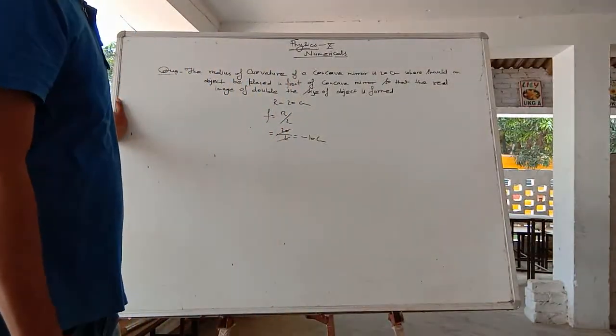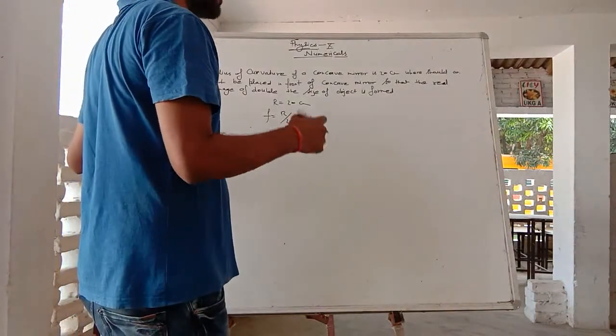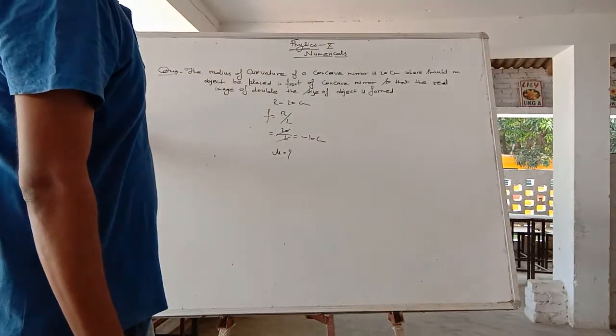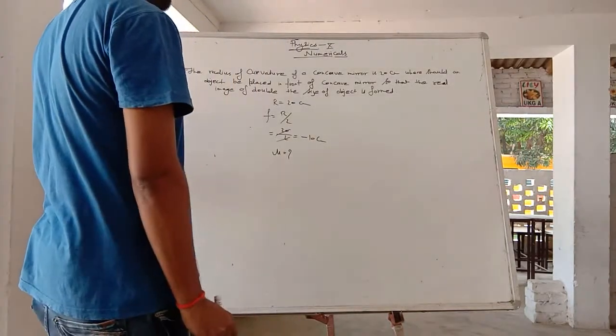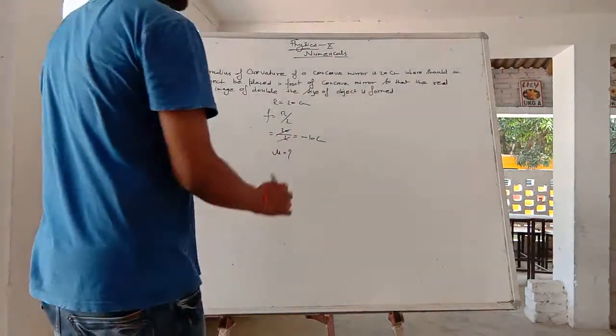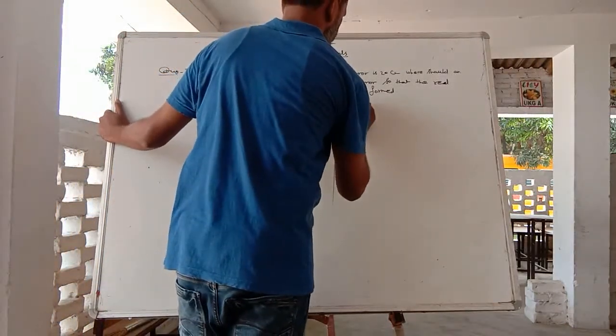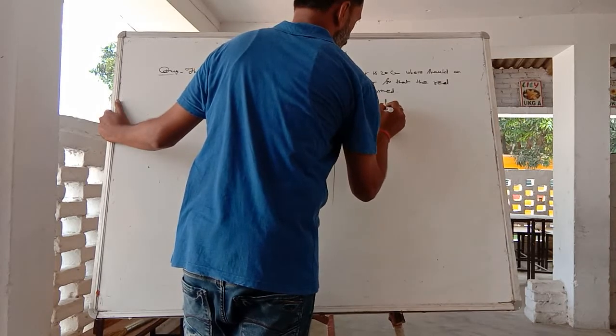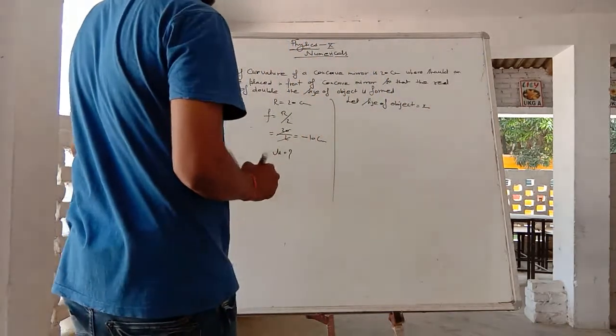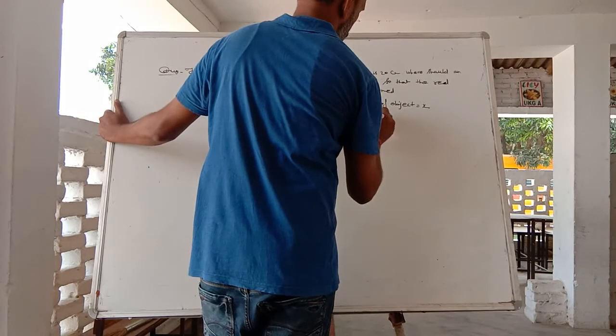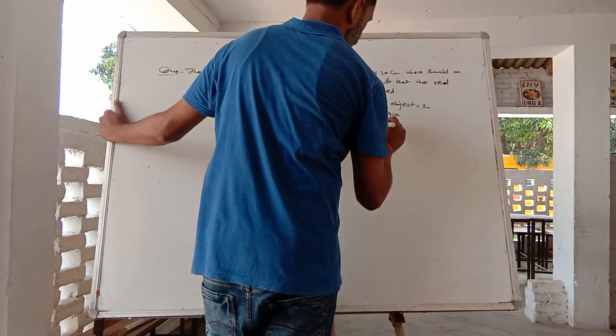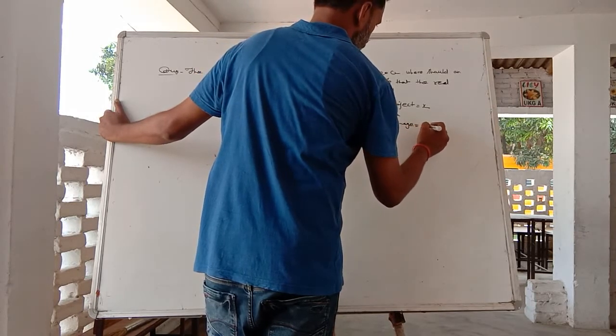The question asks where should an object be placed in front of concave mirror so that the real image is double the size of object. Let the size of object be x. According to question, the size of image is 2x. Using the formula: I upon O is equal to minus V upon U. So 2x upon x is equal to minus V upon U.